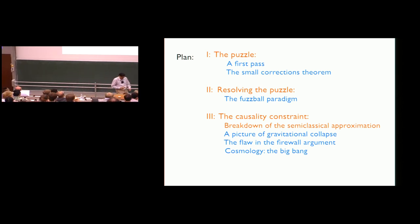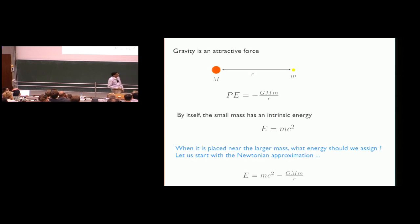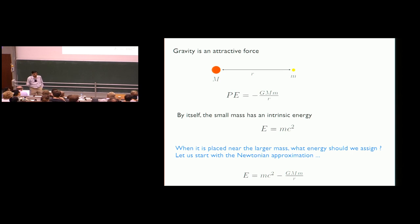Let's get started with some extremely basic things. You all know gravity is an attractive force — what is the consequence of that? If you take a big mass M and a test mass m kept apart at distance r, the attractive nature of the force is built into the formula for potential energy. The Newtonian formula has a minus sign, and that minus sign is what tells you this is an attractive force. As we'll see, everything we learn — including the need to completely change our picture of quantum gravity — is all because of this minus sign.